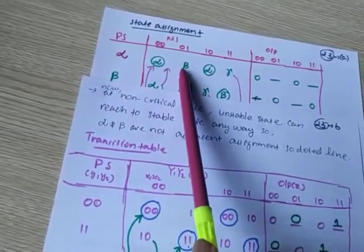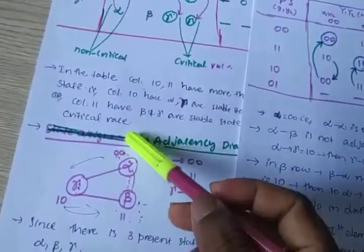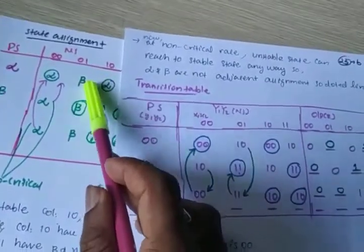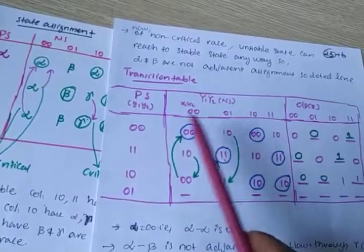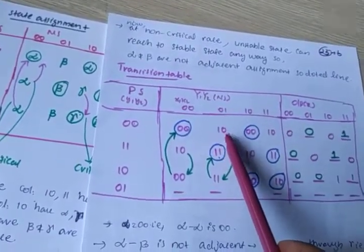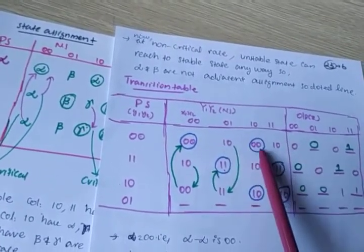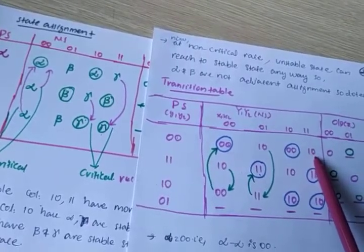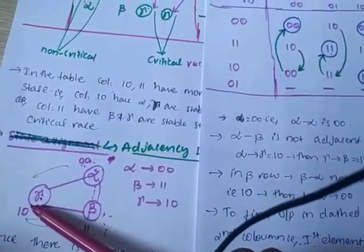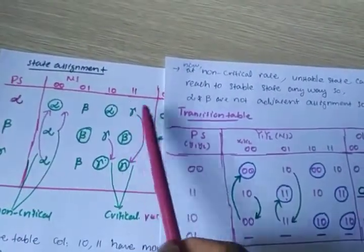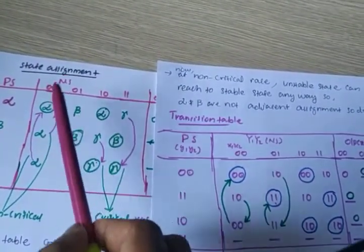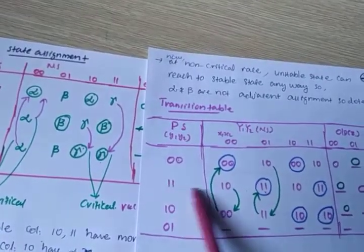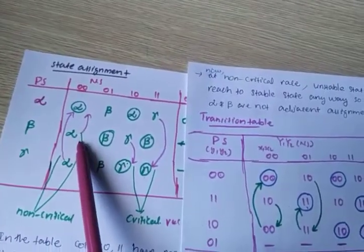For alpha going to beta — these are not adjacent, so first you have to go to gamma, then to beta. That's why I write gamma (1-0) instead of beta (1-1) directly. Alpha to alpha: same state, adjacent, write 0-0. Alpha to gamma: alpha and gamma are adjacent, so write 1-0. Alpha to beta: not adjacent — first go to gamma (1-0), then to beta. So gamma is written here.